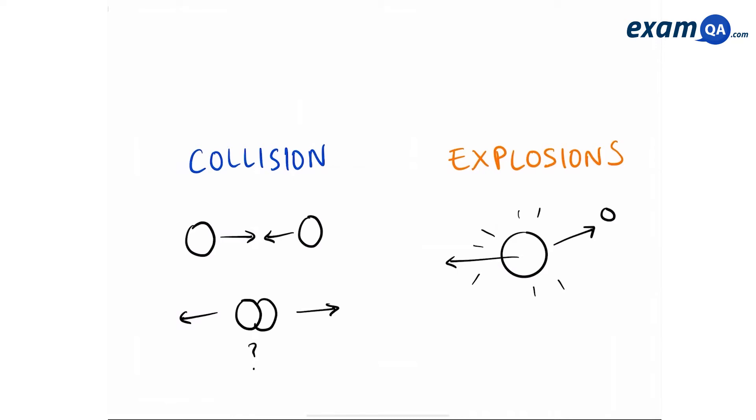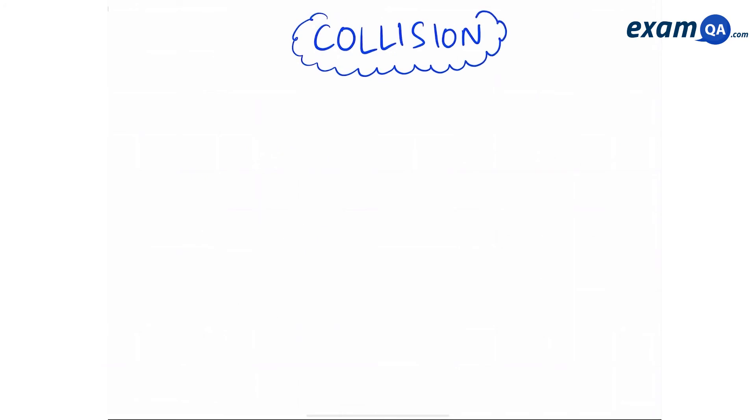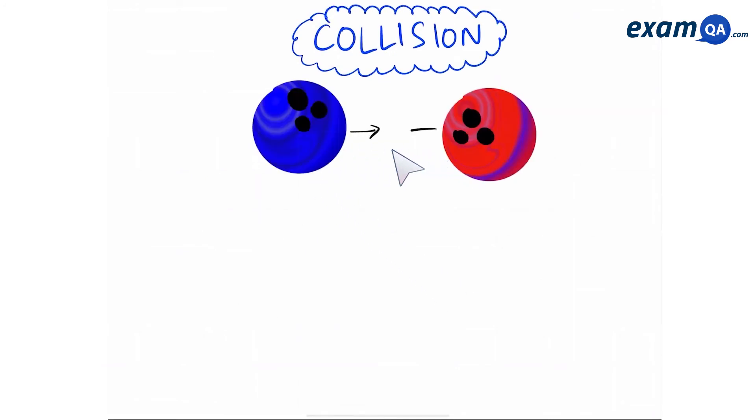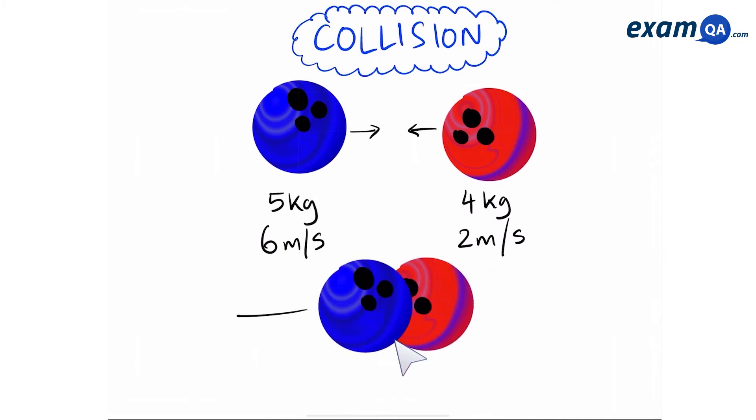So let's start with calculations involving collisions. In this scenario, imagine two bowling balls are moving towards each other. They both have a certain mass and different velocities. After they collide, it is our job to work out which direction they're going to be moving together as a unit. So we have the scenario before the collision and after the collision.